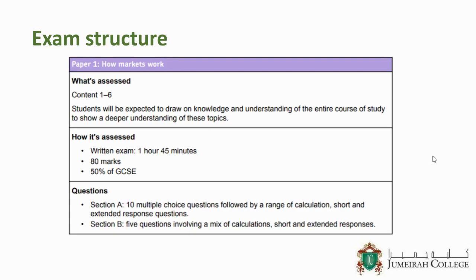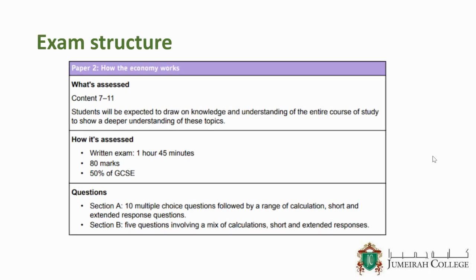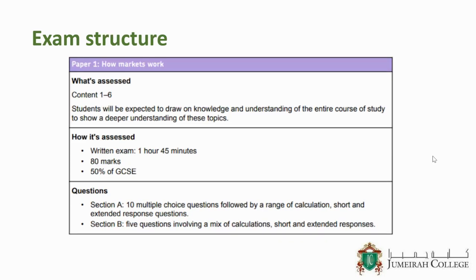How is the course examined? Economics can generally be broken into macroeconomics, which concentrates on the behaviour of the economy as a whole, and microeconomics, which focuses on individual people and businesses. You will have two papers: paper one, which focuses on microeconomics, and paper two, which focuses on macroeconomics. Paper one will be one hour 45 minutes and worth 50% of the full GCSE.